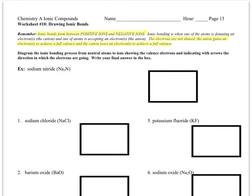This is worksheet 10 of the ionic compounds packet, and this is where we finally get to draw some pictures to represent the bonds or connections that hold the positive metal and the negative non-metal together.